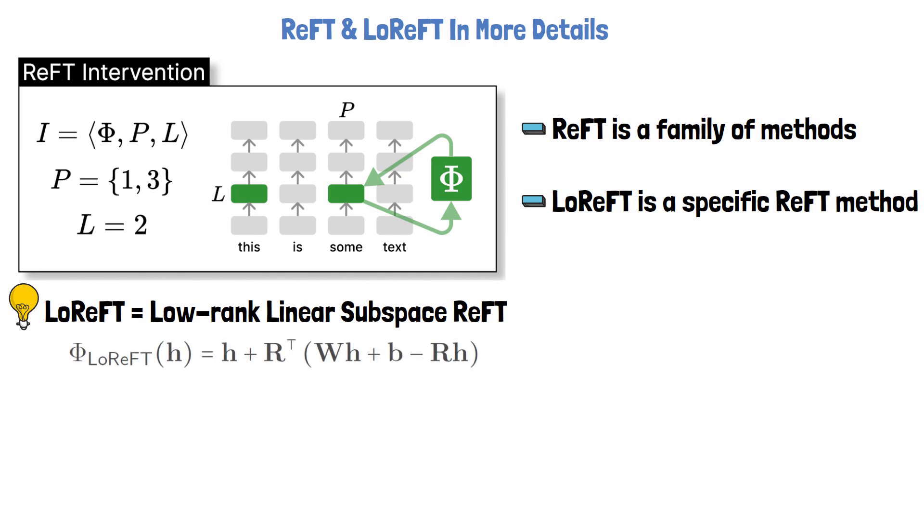Specifically, the function is defined with the following equation from the paper. h is the representation we get from the pre-trained transformer layer, and we add to it a component which is dependent on a matrix R, a matrix W, and a vector b. During training of LoReFT we train the weights of R, W, and b, in order to use that edit function.